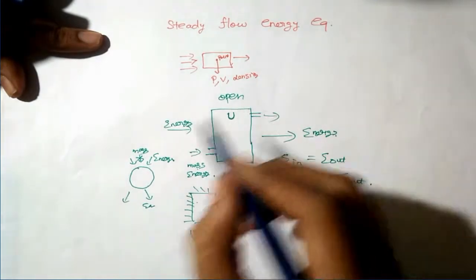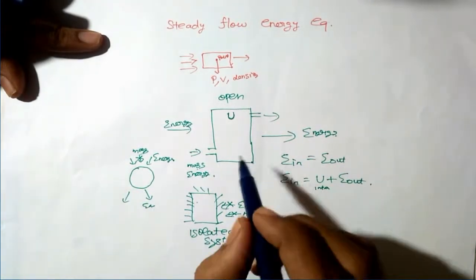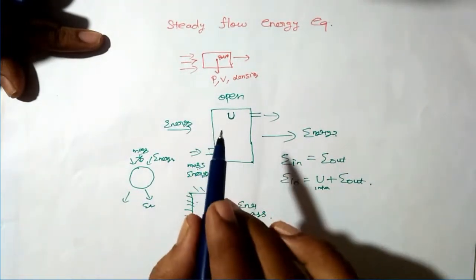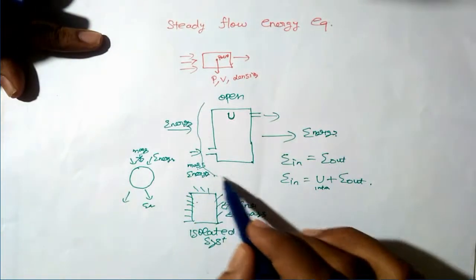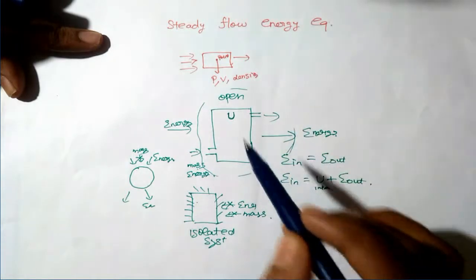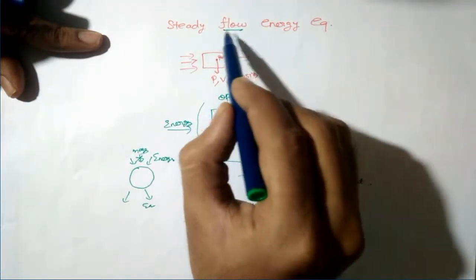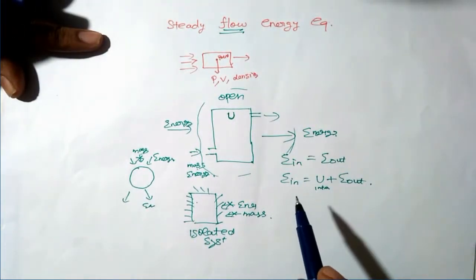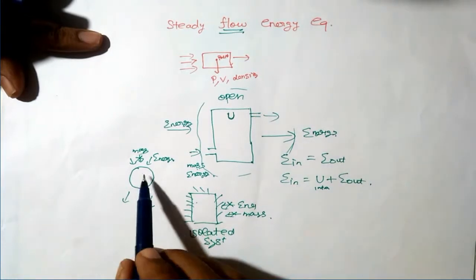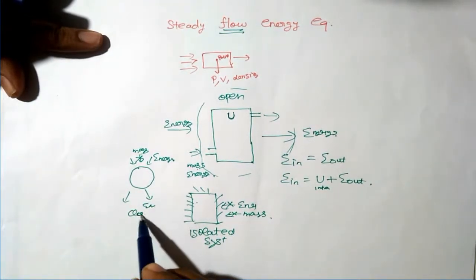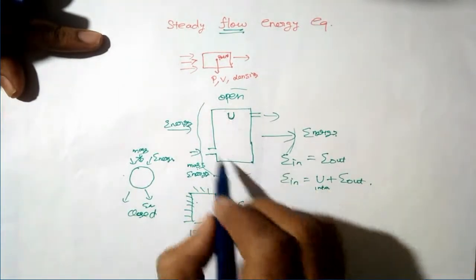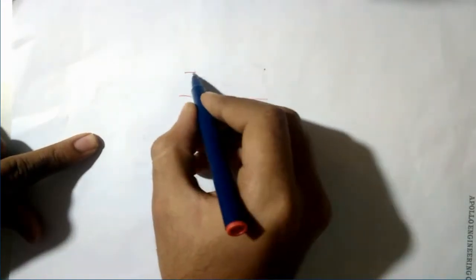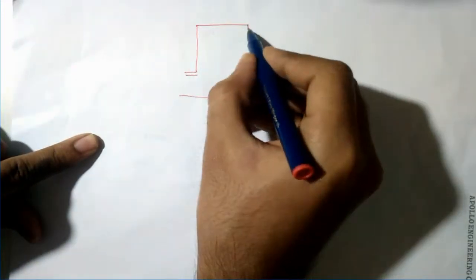For deriving the steady flow energy equation, we are considering an open system, because only in an open system can the flow of fluid be seen. In a closed system, we cannot see the flow of fluid. So we consider the open system. Let me draw the open system.